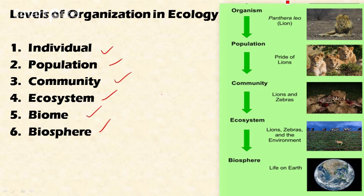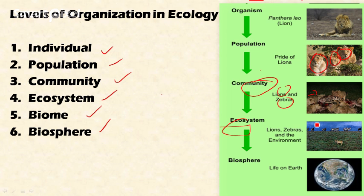At the basic level is the organism — for example, a lion is an individual organism. The population is a group of individuals of a particular species; for example, a pride of lions represents the lion population. The community is the group of different species living together, such as lions, zebra, and deer. The ecosystem involves the interaction of the community with the environment.